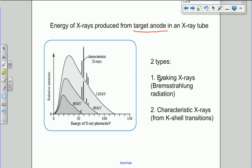These produce X-rays of two different types. The first type are called braking X-rays, sometimes known as Bremsstrahlung radiation. The second type are called characteristic X-rays. We're going to look at each of these in turn and find out the origin of these two and what the mechanism is.